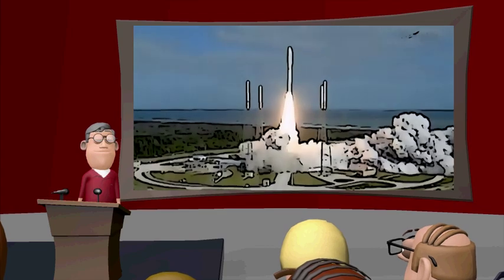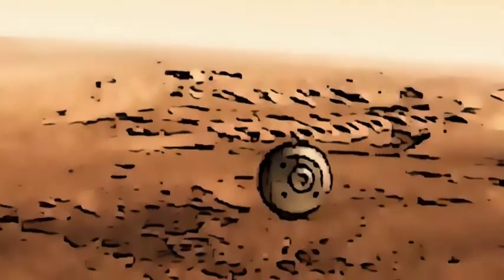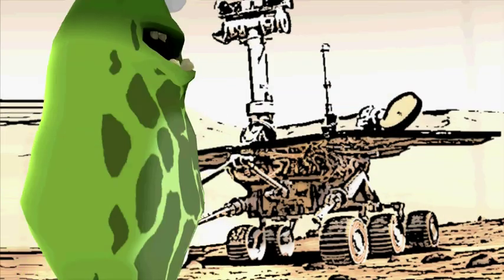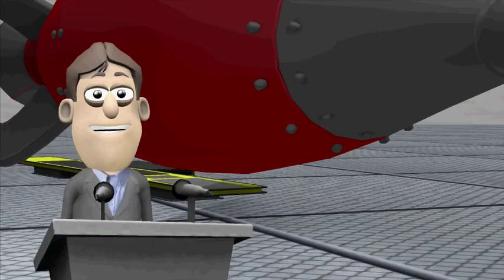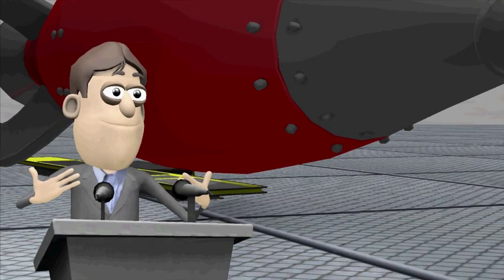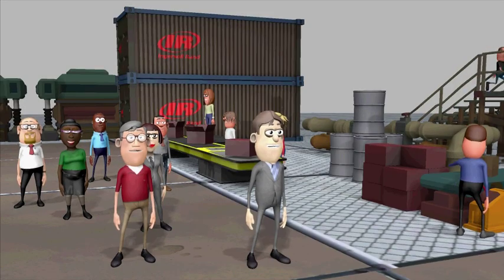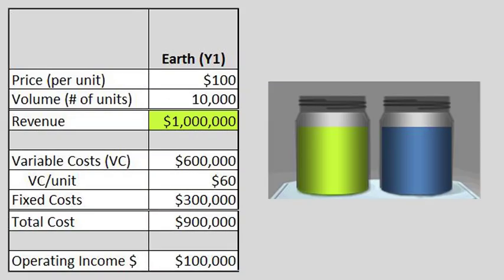To understand each of these levers better, let's imagine Ingersoll Rand is targeting a new emerging market. After the NASA rover discovered life on Mars, we learned the Martians needed a wide range of solutions. Our product development teams began working with the Martians to develop a profitable and sustainable market. To keep things simple, the teams decided to initially focus on one product line. Current sales for this product on Earth are 10,000 units a year at $100 per unit generating revenues of $1 million.